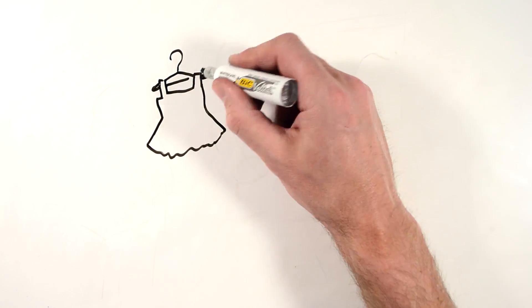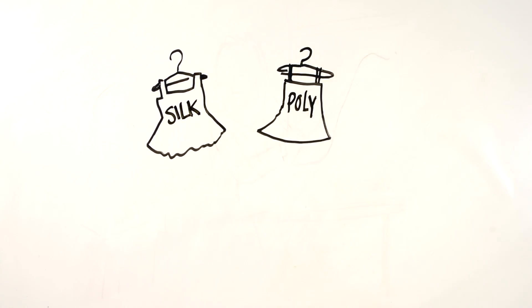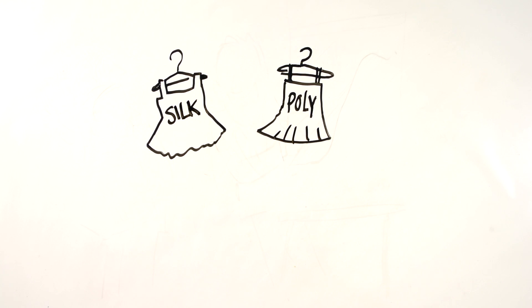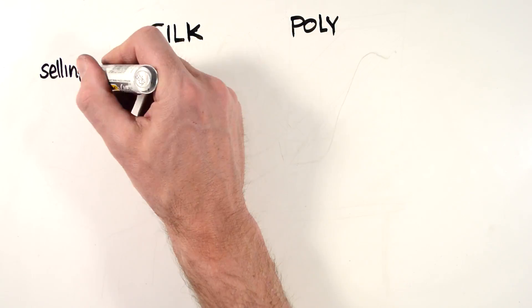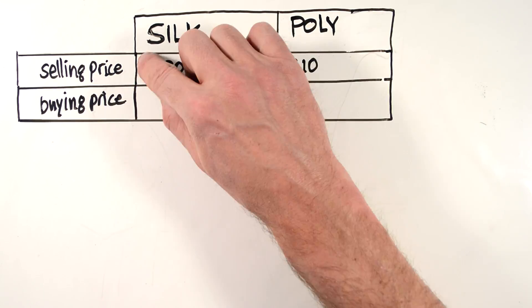Dekkungsbeitrag is used to compare articles in the assortment. Consider, for example, selling a polyester and a silk dress.